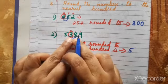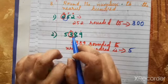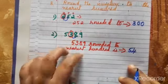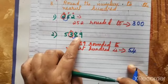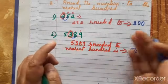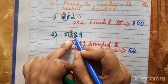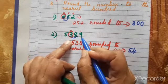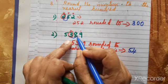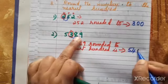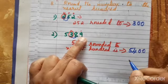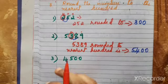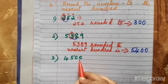8 is greater than 5, so it is a rich person who can help. 8 helps 3, so 3 becomes 4. Once door knocked, the digits after become zero. So 8 becomes 0 and 9 also becomes 0. The answer for 5389 rounded to nearest hundred is 5400.